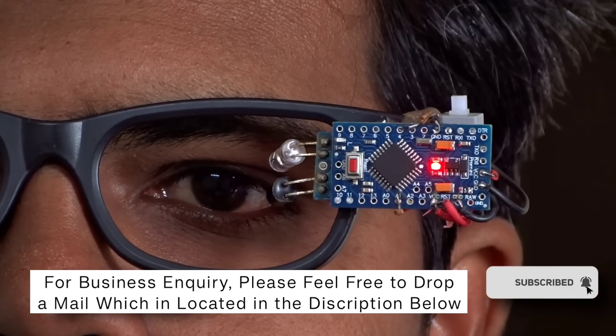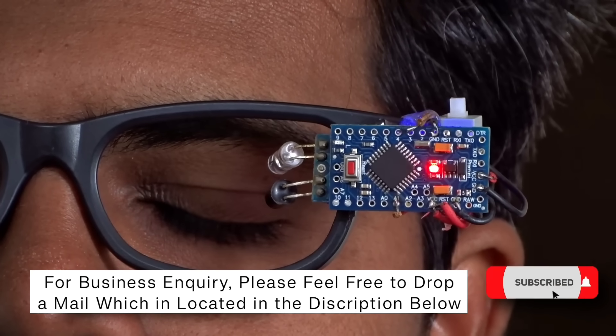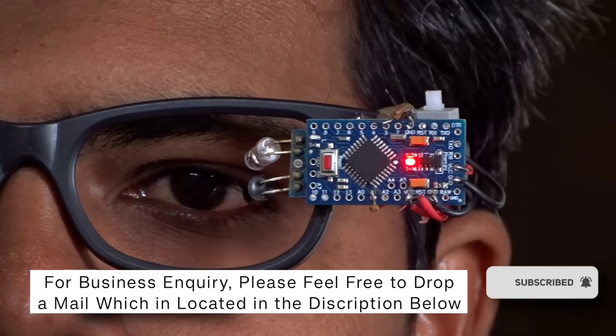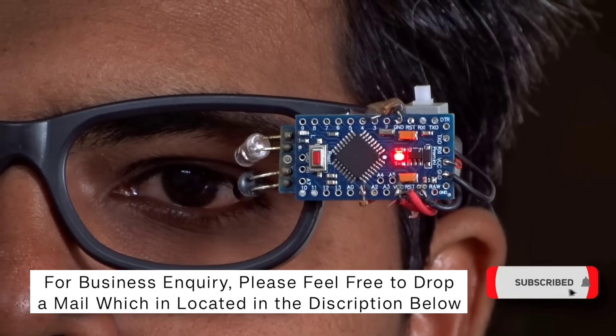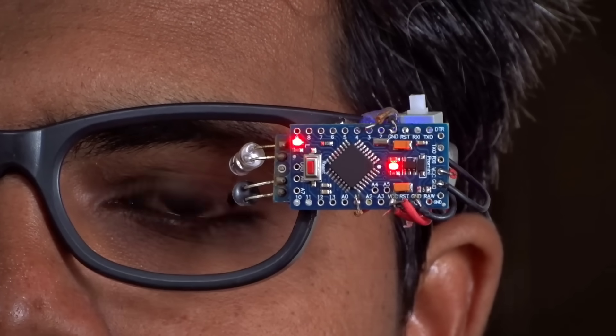Unlike normal blinking, where the eyes naturally blink every second or two, for example, if I don't blink for more than three to four seconds, the system immediately triggers the buzzer, alerting us that something might be wrong, like drowsiness or fatigue. This kind of setup can be especially useful for applications like driver alert systems.